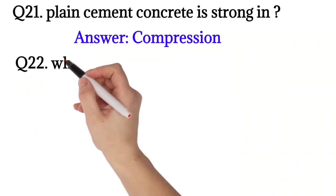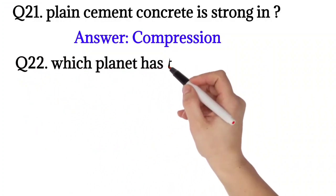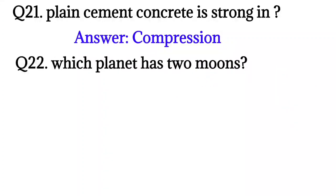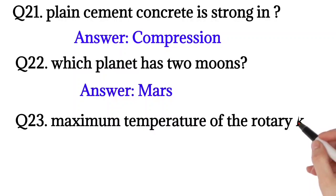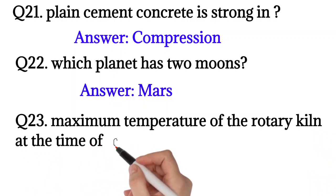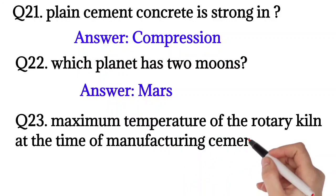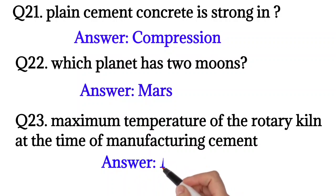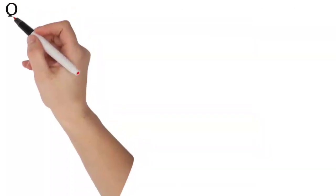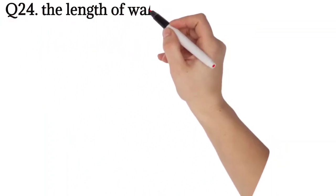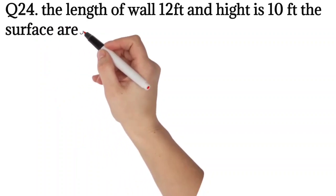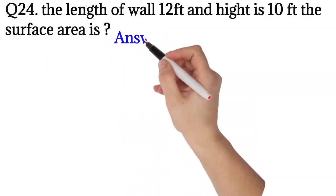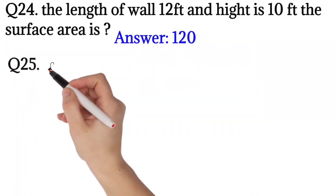Question number 22: Which planet has two moons? The answer is Mars. Question 23: Maximum temperature of the rotary kiln at the time of manufacturing cement. The answer is 1450 centigrade. Question number 24: The length of a wall is 12 feet and height is 10 feet. The surface area is? The answer is 120 square feet.